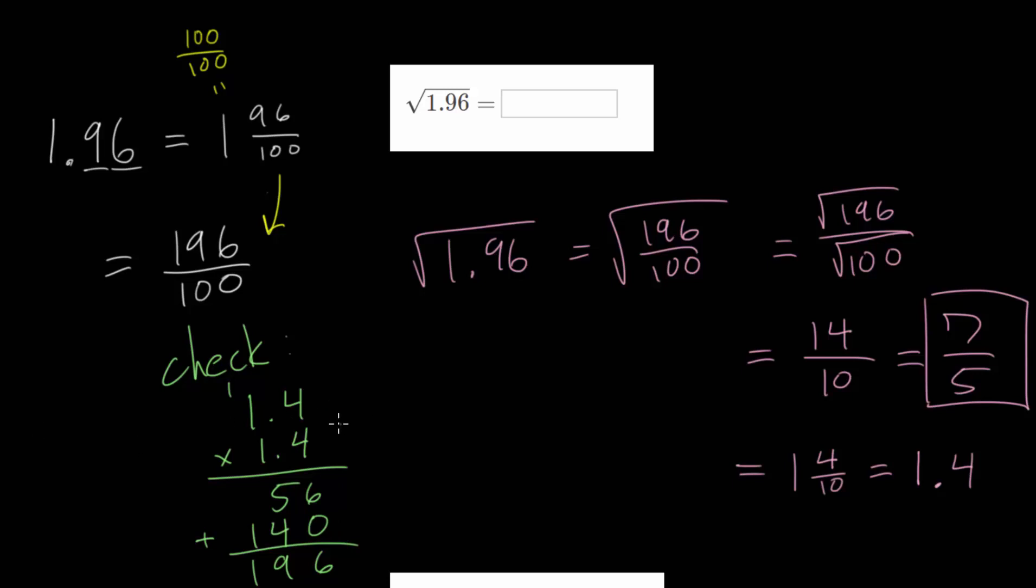But again, remember, we now have to count up the decimal places. We have 2. So we move the decimal two places over in our answer. So essentially, 1.4 squared is equal to 1.96, which is exactly what we expected. So that way, we can feel confident that either 7/5 or this 1.4, this is the correct answer here.